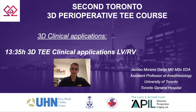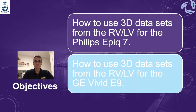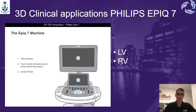Good afternoon everyone and thank you for being here for this presentation on how to use 3D transesophageal echocardiography (3DTE) for clinical applications when assessing the left and right ventricles. I have no disclosures to discuss. The main objective of this talk is to learn how to use 3D datasets to assess the right and left ventricles using the Philips EPIC 7 and the GE Vivid E9 machines. We are going to start with the Philips EPIC 7.